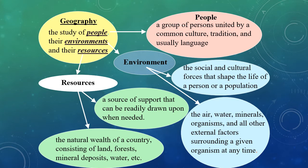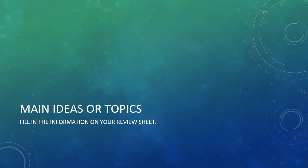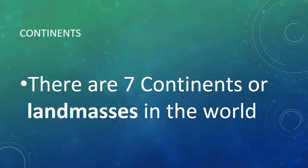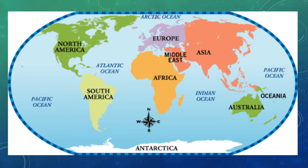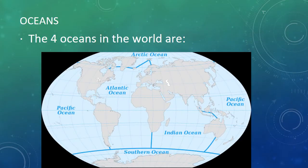Looking at continents — there are seven continents or land masses in the world: North America, South America, Africa, Middle East, Asia, Europe, and Australia and Oceania. The four main oceans in the world are the Pacific, Atlantic, Indian, and Arctic, and the Southern Ocean as well.